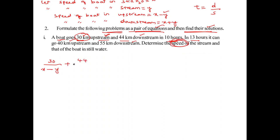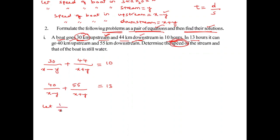Setting up the equations using distance and time data: in one direction, 30 times of A plus 44 times of B equals the time, and in the other direction, 40A plus 55B gives the second equation. Assuming 1 by x minus y equals A and 1 by x plus y equals B.